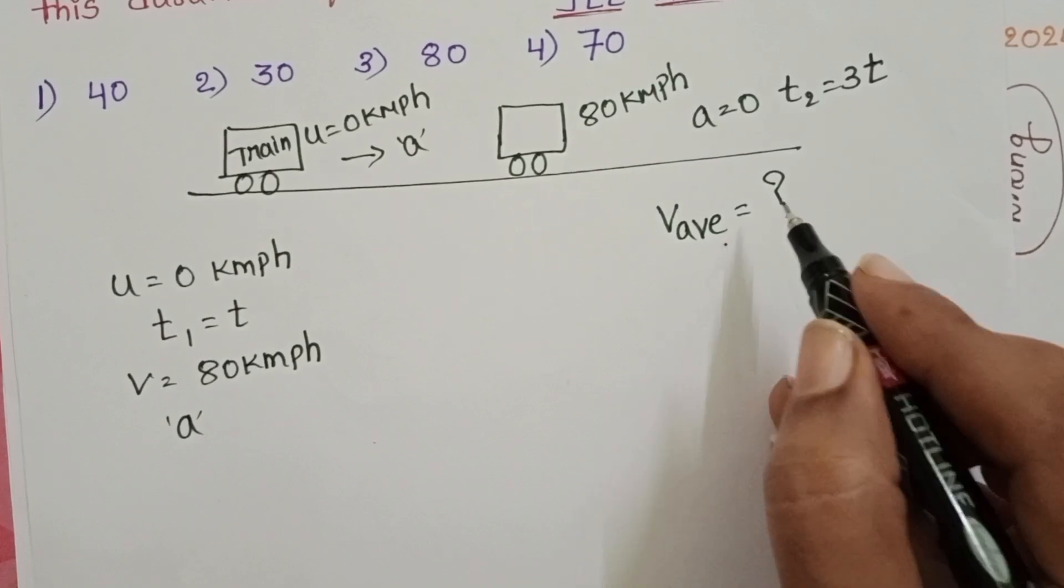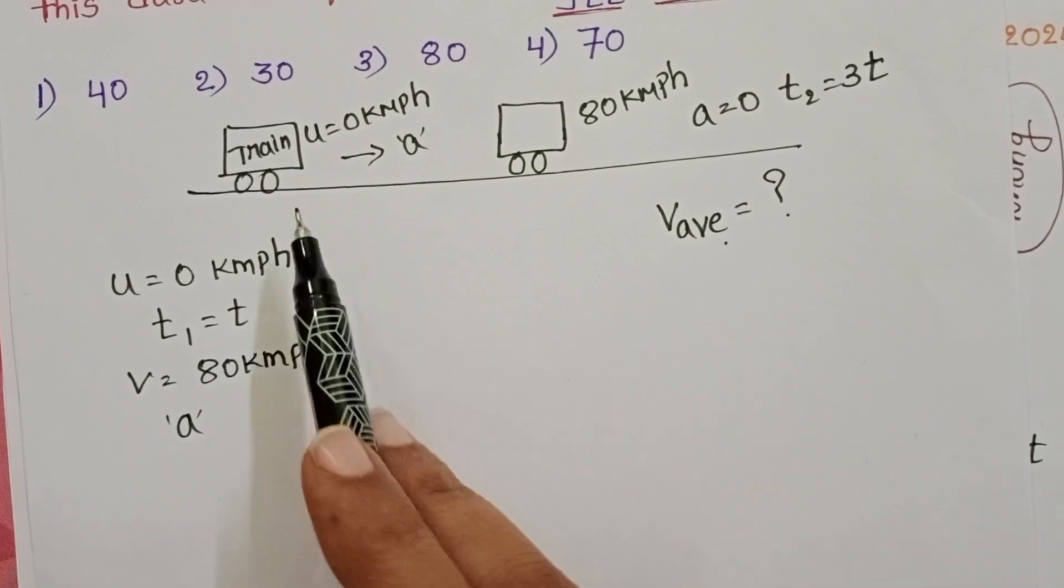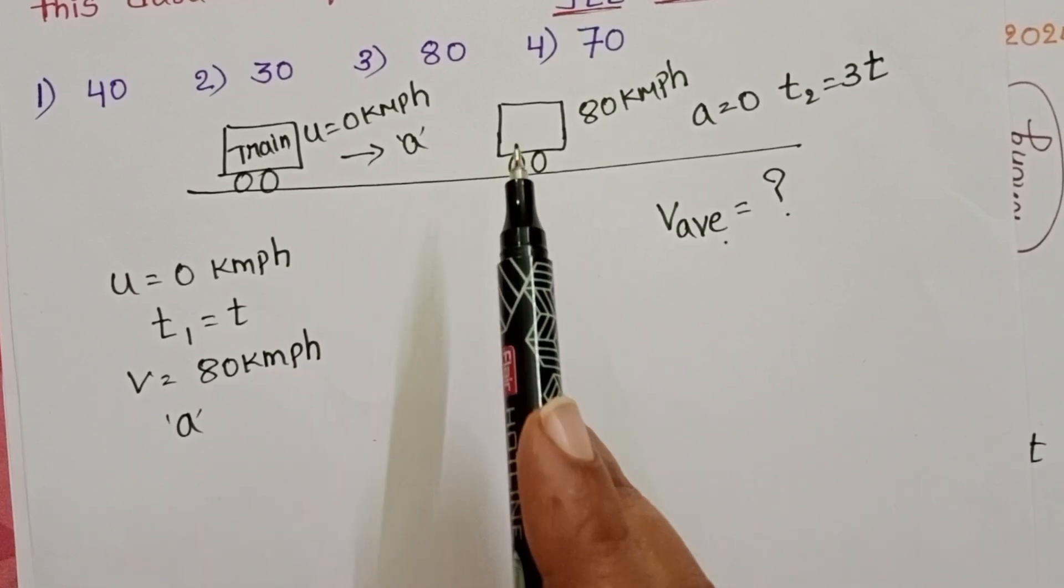We know average speed is equals to total distance by total time taken. So, first to find out the distance travelled by the train.